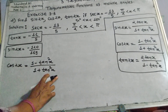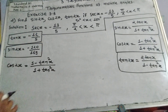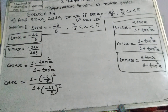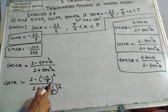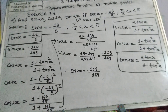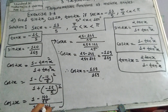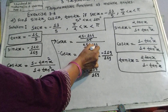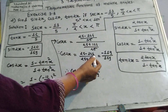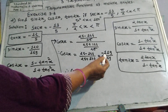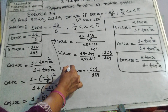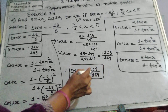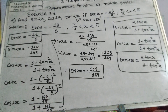Now cos 2x equals 1 minus tan²x divided by 1 plus tan²x. Putting in the value of tan x equal to negative 12 upon 5 and solving: 1 minus 144 upon 25, divided by 1 plus 144 upon 25. The numerator becomes 25 minus 144 equals negative 119, divided by 25. The denominator becomes 25 plus 144 equals 169, divided by 25. The 25s cancel, therefore cos 2x equals negative 119 divided by 169.